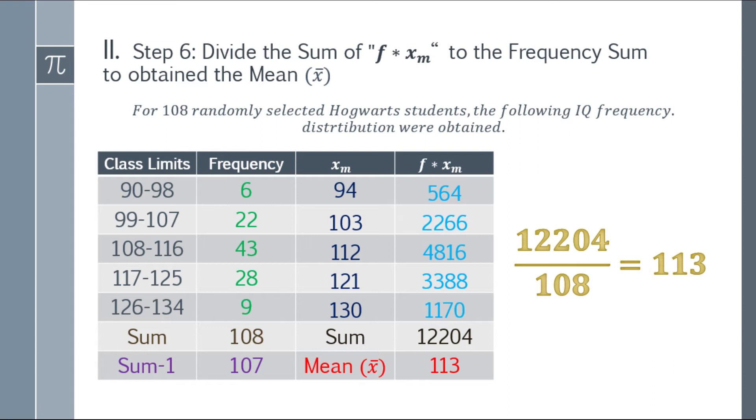Now we can get the mean. How do we get the mean? Take the sum we just calculated, 12,204, and divide it by the sum of frequency, 108. Again, we use 108, not sum minus 1. So 12,204 divided by 108 equals 113. That's our mean.